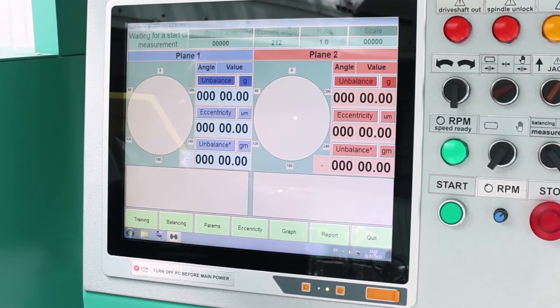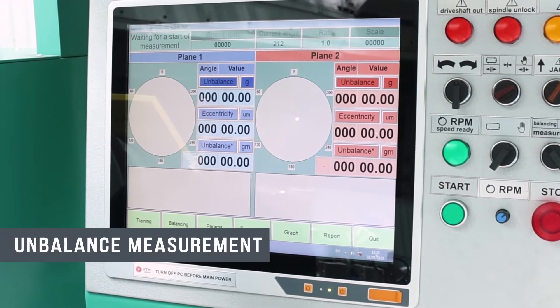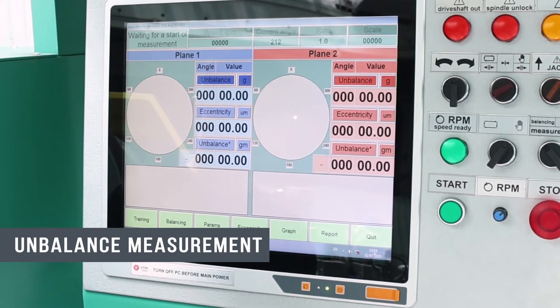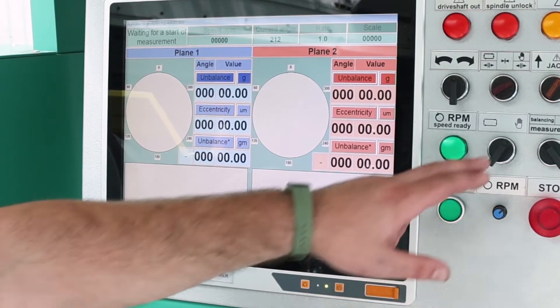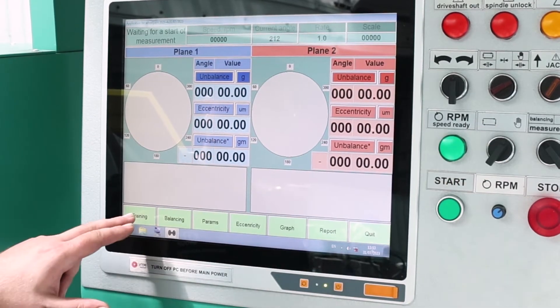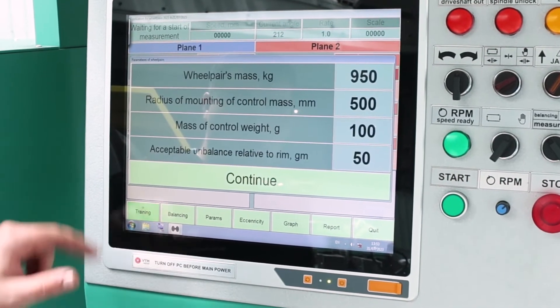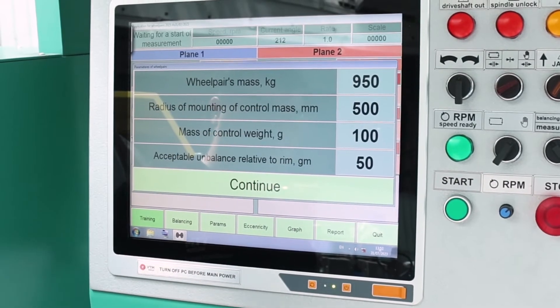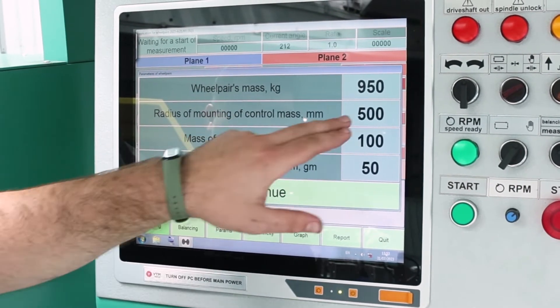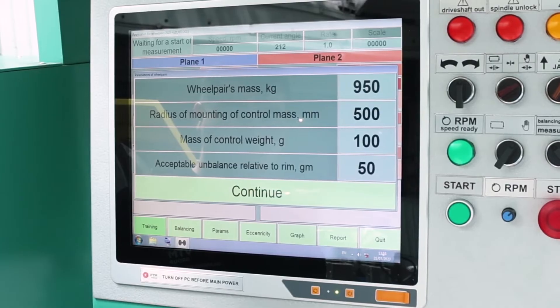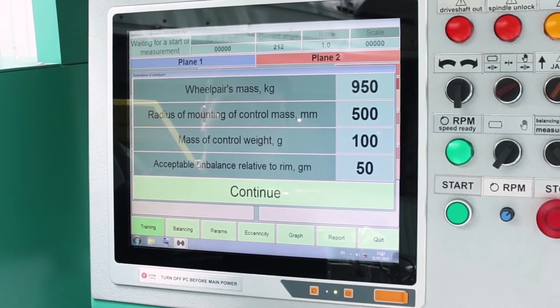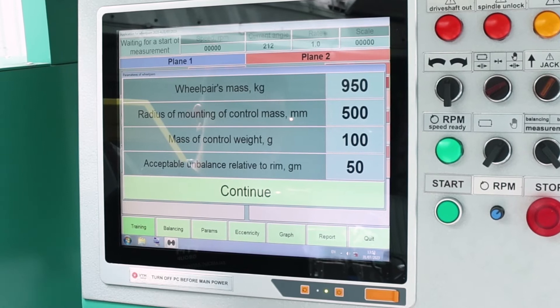Switching the computer, we will automatically enter the program. Next, we will need to set up the machine for a wheelset. To do this, it will be necessary to be in manual measurement mode and enter the training mode, where we will indicate the weight of the wheelset, the radius of the imbalance measurement, the trial weight that we will set for training launch, and the balancing tolerance in grams per millimeter.